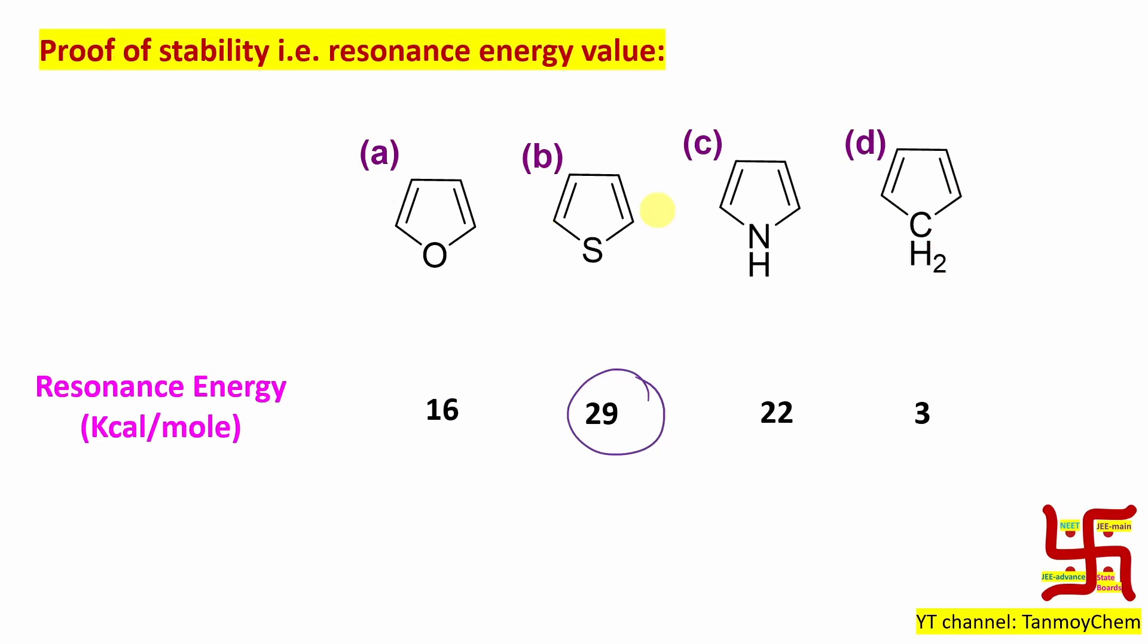If you look at the resonance energy, I should write the more accurate resonance stabilization energy of thiophene. The sulfur analog is 29 kilocalories per mole. Oxygen belongs to the same group, group 16, but it's 16.